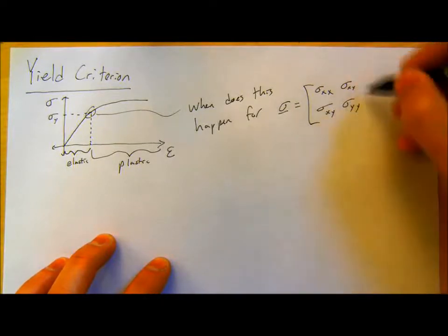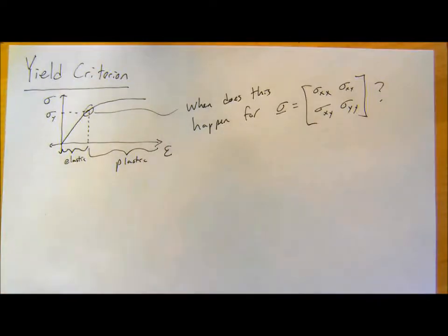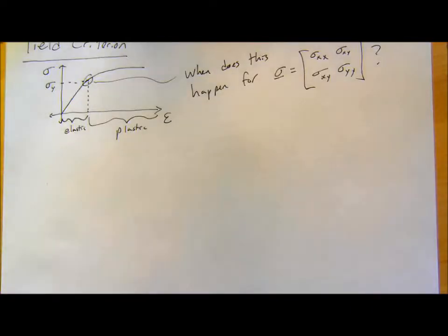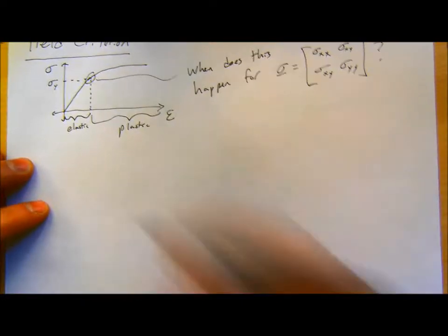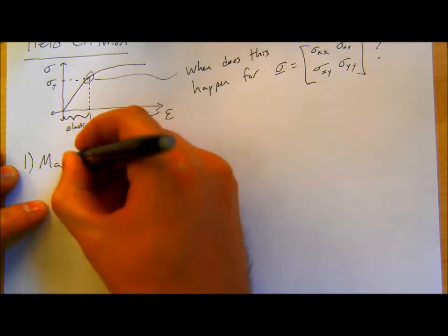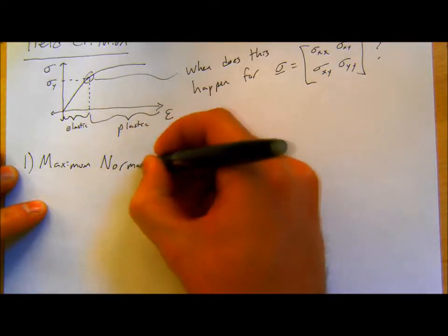The simplest criteria — the simplest way to think about it — is to look at those principal stresses and take the maximum one. The simplest one is the maximum normal stress criterion. This is normally what's used for brittle materials. Our chalk is a good example of this.